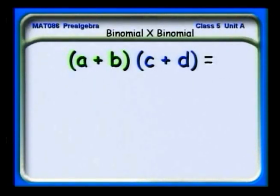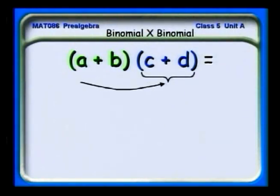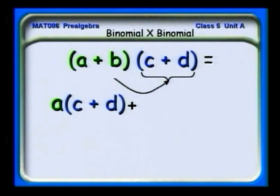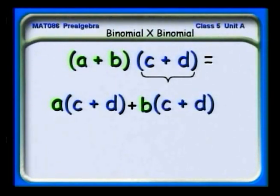Let's investigate the situation algebraically. Here we have two binomials, (a + b) times (c + d). We have to multiply (c + d) by both a and b. First, we multiply a times the quantity (c + d), then we use the same sign between a and b — plus or minus. Then we multiply b by (c + d). In a way, we've applied the distributive law once, thinking of (a + b) as one term.